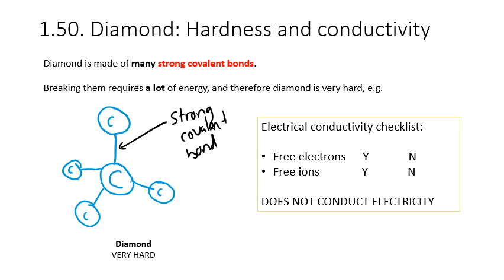There are two other properties of diamond we need to explain: its hardness and its conductivity. Its hardness comes about for the same reason it has a high melting point — it's made of very many strong covalent bonds, and breaking them requires a lot of energy. For electrical conductivity, we apply the conductivity checklist: for electricity to flow, you need electrons or ions that are free to move. In diamond, are there any free electrons? No — the electrons are in bonds and fixed around atoms. Are there any free ions? No, there are no ions at all. Therefore, diamond does not conduct electricity.